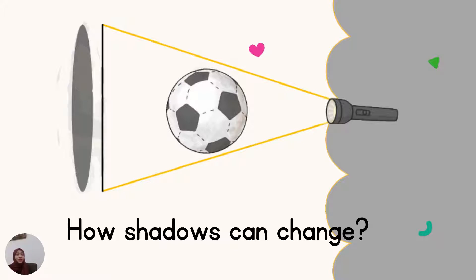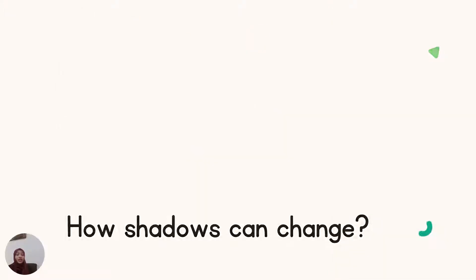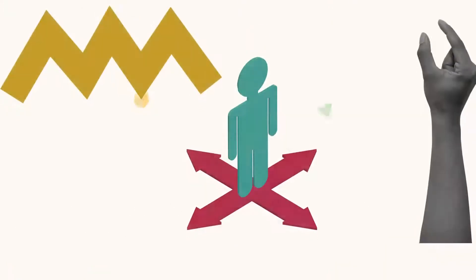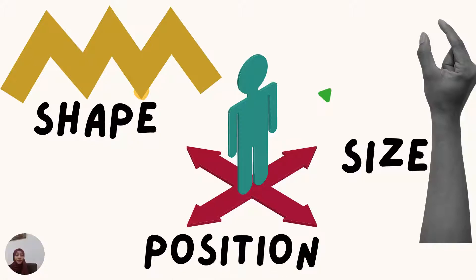Shadows can change in three things: one, the shape; two, the size; three, the position.